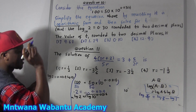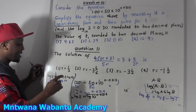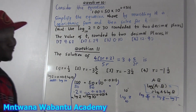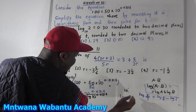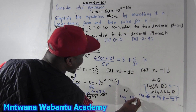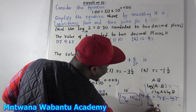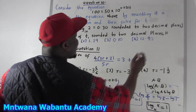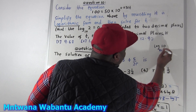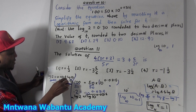Now mathematically, log of 10 — if there's no base written, that means the base is 10 by default. So log base 10 of 10 equals 1. Make sure you know this. If somebody gives you log base x of x, it is equal to 1. So log of 10 with no written base equals 1, because the base is automatically 10.